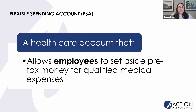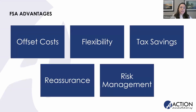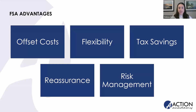Our final type of savings account is an FSA — flexible spending account. FSAs allow employees to set aside money on a pre-tax basis for qualified medical expenses such as medical, dental, vision, deductibles, co-pays, and co-insurance. FSAs provide an opportunity for employees to offset out-of-pocket costs associated with their health care plans. We should note that FSAs may be paired with any health plan, not just high deductible ones — so as long as you pick a plan that offers one, you can have one.